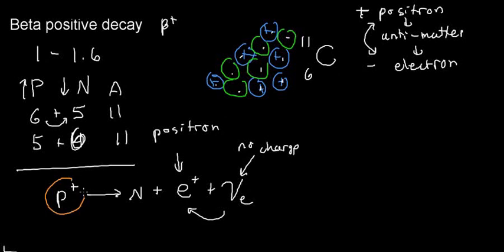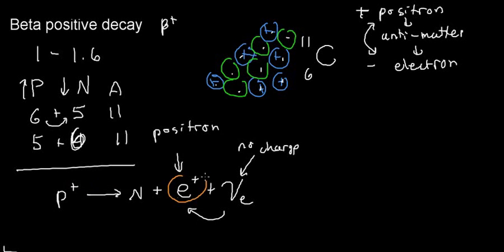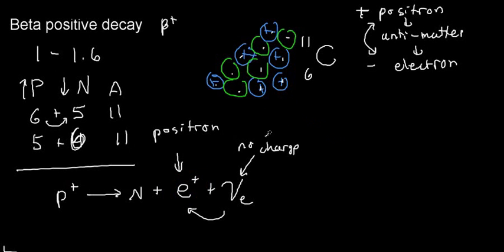So: a proton with a positive charge can spontaneously turn into a neutron with no charge, provided I eject a positron. Positrons do not occur naturally in the nucleus, so they're ejected out, and a neutrino is also created.